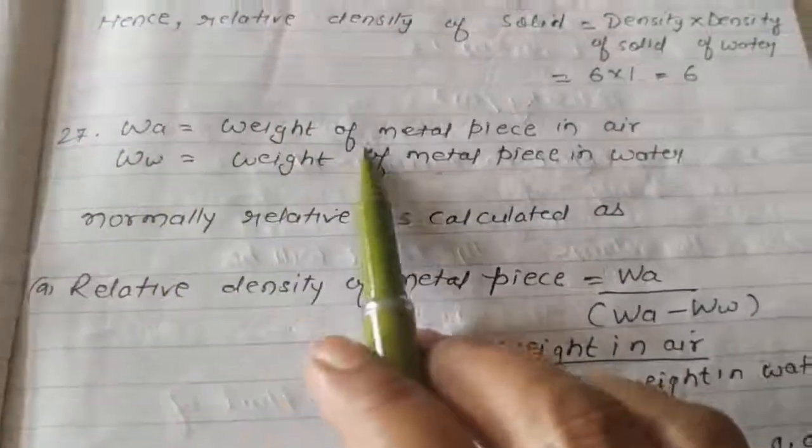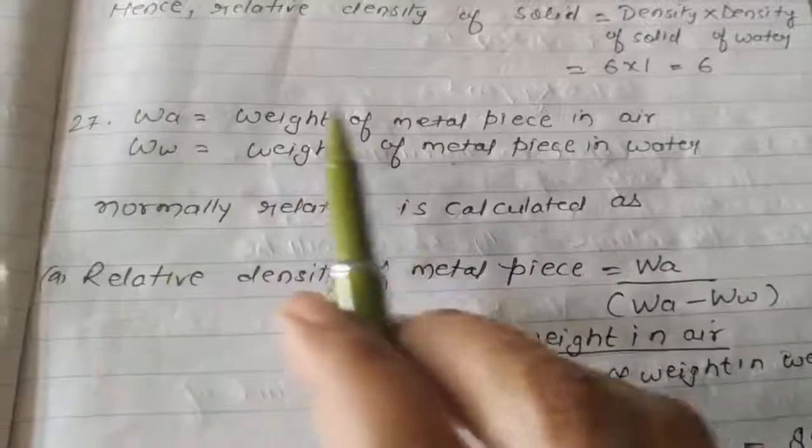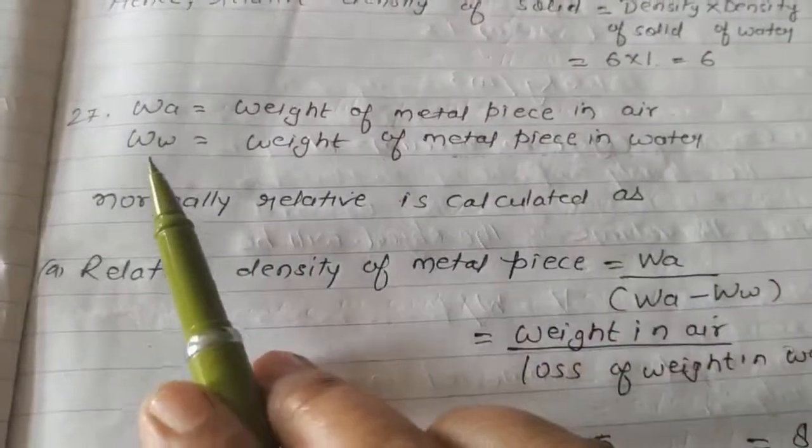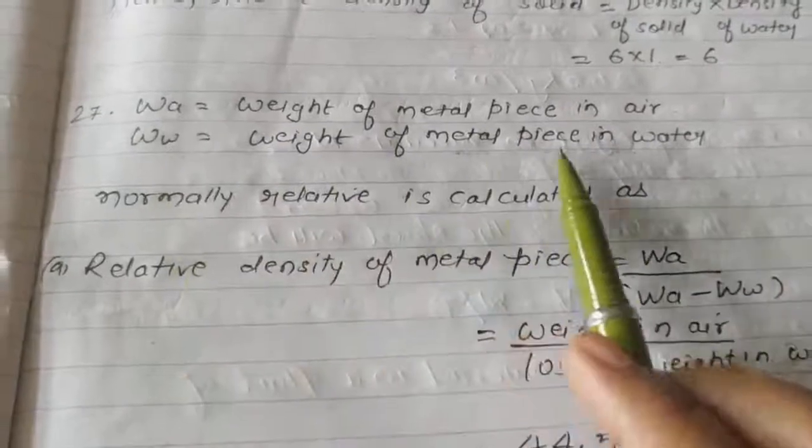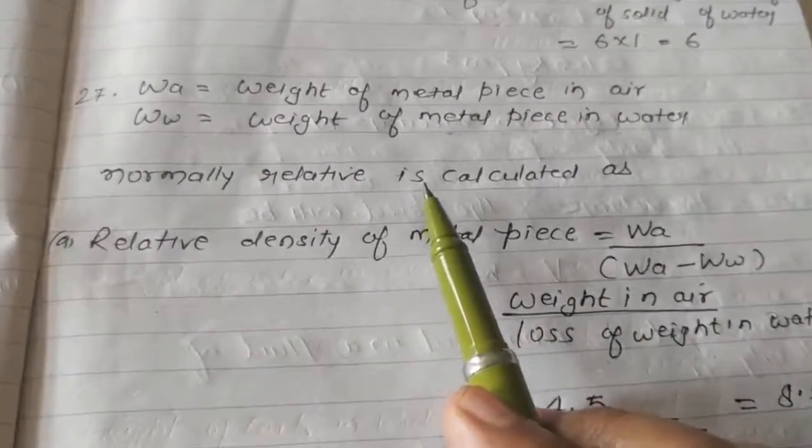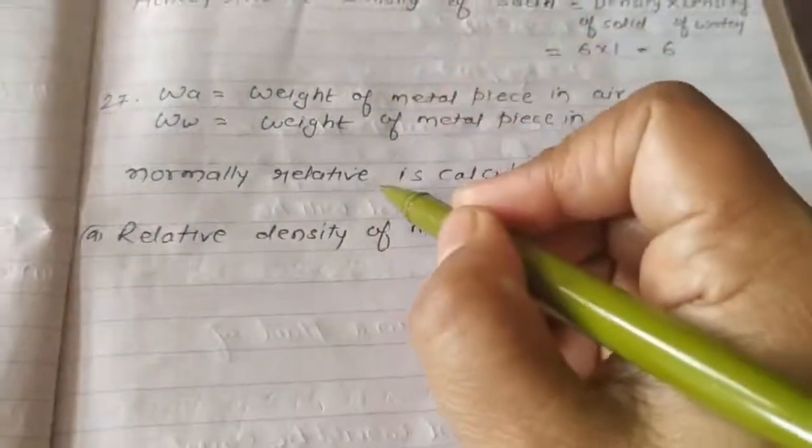This is weight of metal piece in air. Here a represents air. So, weight of metal piece in air. Then W small w, weight of metal piece in water. So, normally relative density is calculated as, or relative density, here density.